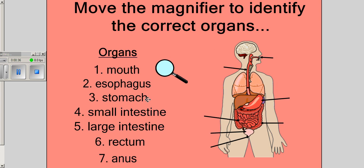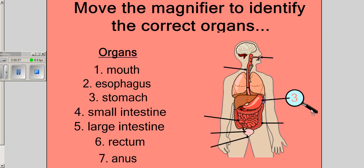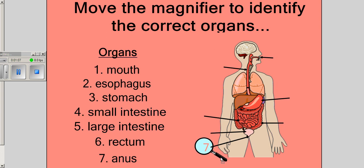These are the seven basic true organs of the digestive system. They're called the true organs because the food actually passes through them. Starting at the top, your food begins in your mouth and then goes down through the esophagus into your stomach. From there, it goes into the small intestine, from the small intestine into the large intestine, past the rectum and through your anus out of your body.